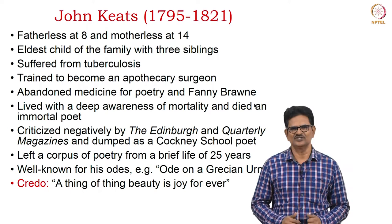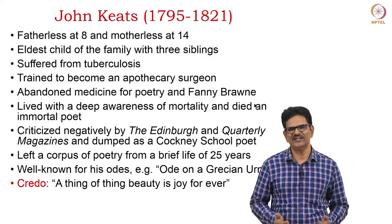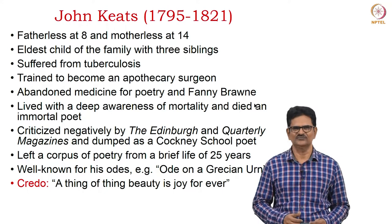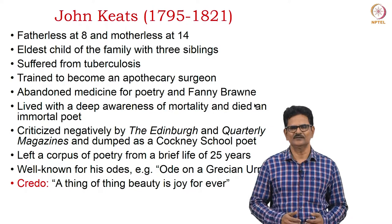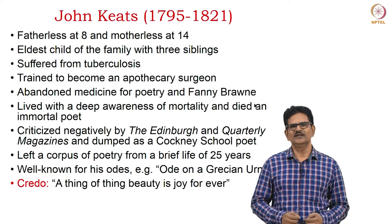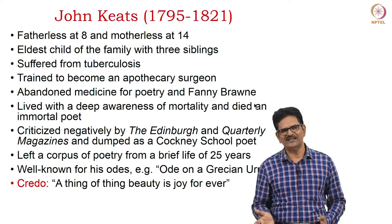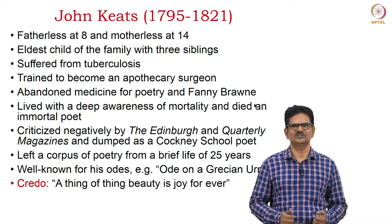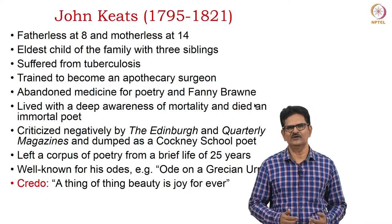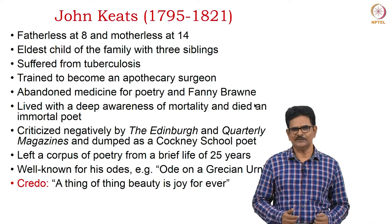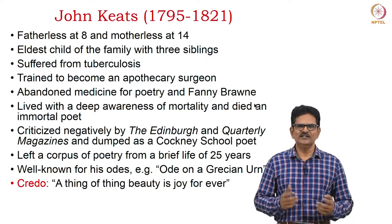John Keats was born in 1795 and died in 1821. In his lifetime, he went through various difficulties — he lost his father at the age of eight and his mother at fourteen. He was the eldest child of the family with three siblings. He struggled seriously with tuberculosis and died very early. He was trained to become an apothecary surgeon but abandoned medicine for the sake of poetry and his lady love Fanny Braun. He lived with a deep awareness of mortality but died as an immortal poet.